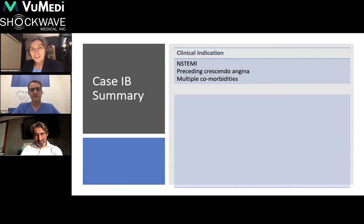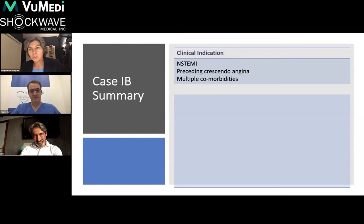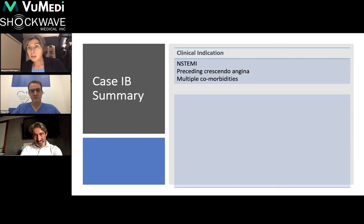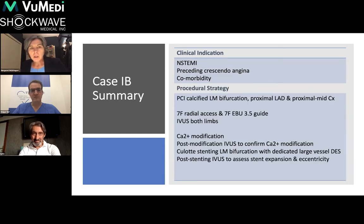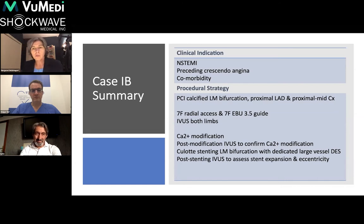The operator took the opposite approach, deciding to start with the left system. The cardiac surgeons felt the patient was very high risk for surgery given his calcific vascular disease and LV dysfunction, and referred him back for complex PCI. The decision was made to go after the left system disease while being very careful to protect the collateral to the right coronary artery, addressing the calcium in the left main bifurcation, the proximal LAD, and disease in the proximal to mid-circumflex.